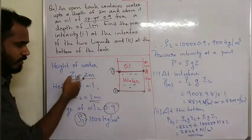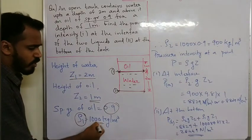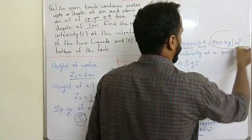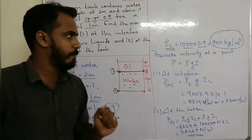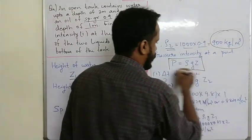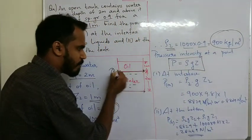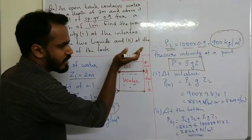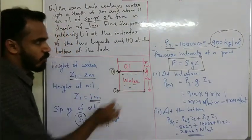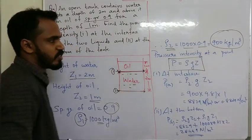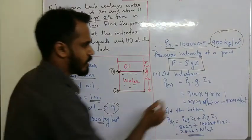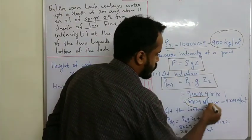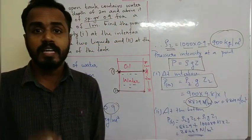The specific gravity of oil is 0.9, so density of oil rho2 = 0.9 × 1000 = 900 kg/m³, and density of water rho1 = 1000 kg/m³. At the interface, pressure = rho2 × g × Z2 = 900 × 9.81 × 1 = 8829 N/m², or 0.8829 N/cm².